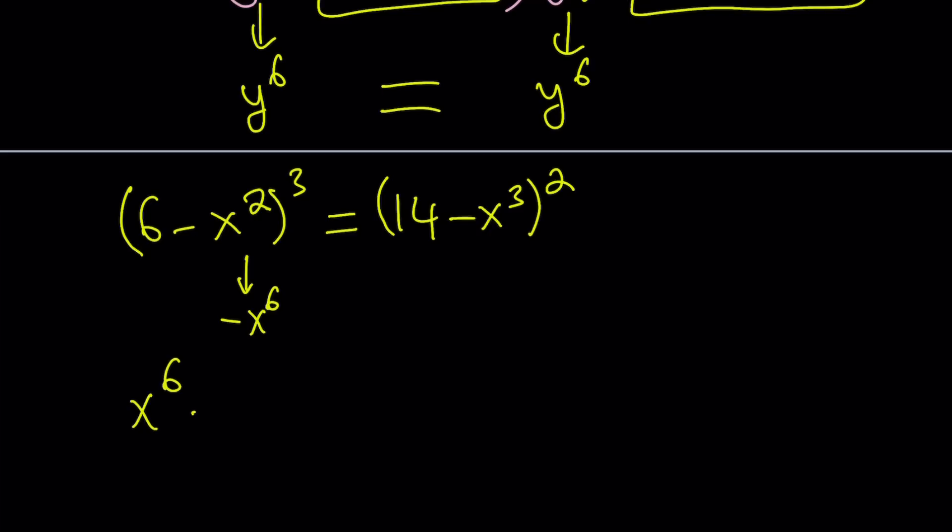x to the sixth power minus 9x to the fourth power minus 14x to the third power. Oh man, if you didn't have an x cubed, then we could kind of turn it into a biquadratic or bicubic, something like that. But that's not the case. Anyways, this is a hexic equation and it looks horrible.